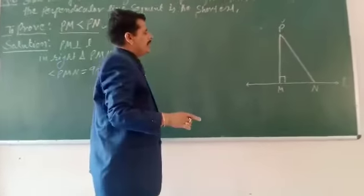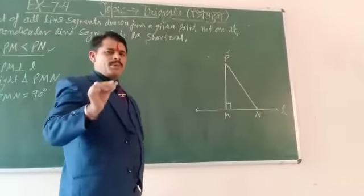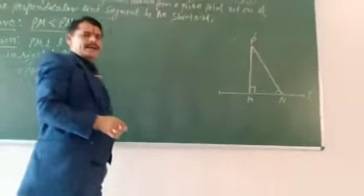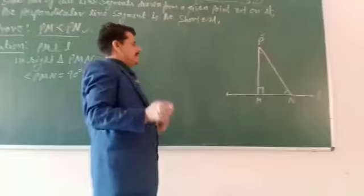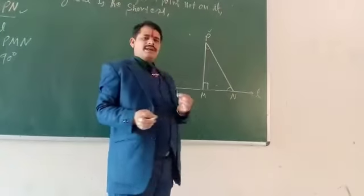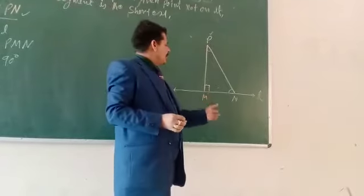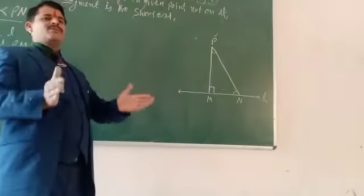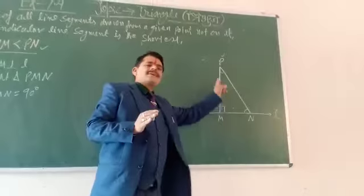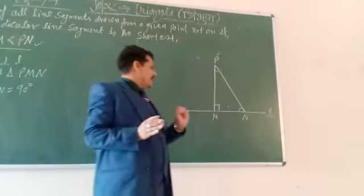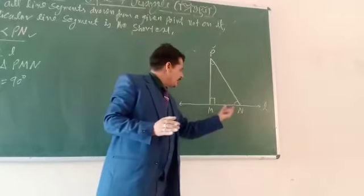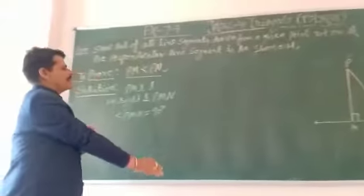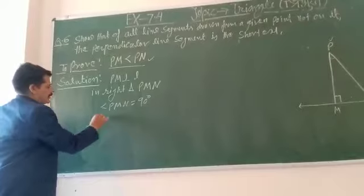In a right triangle, angle sum property of triangle states that all angles sum to 180 degrees. Since angle PMN is 90 degrees, the other two angles must sum to 90 degrees.